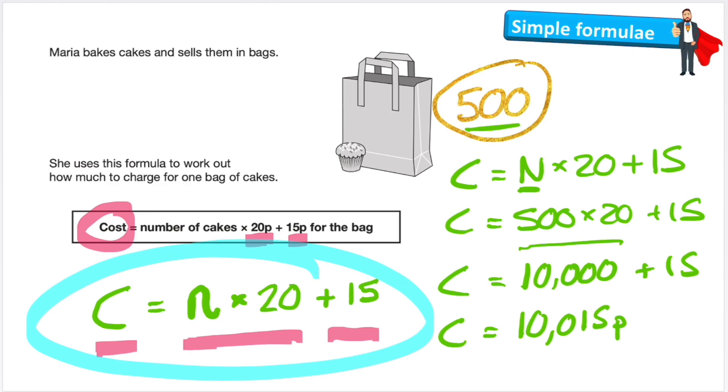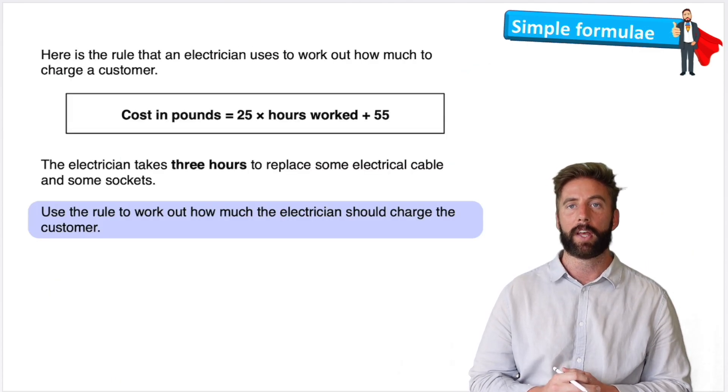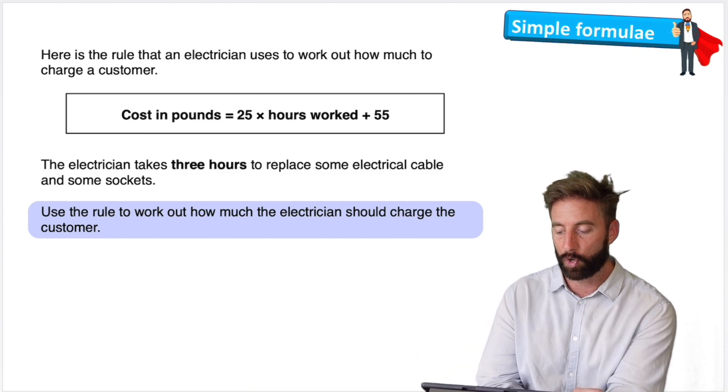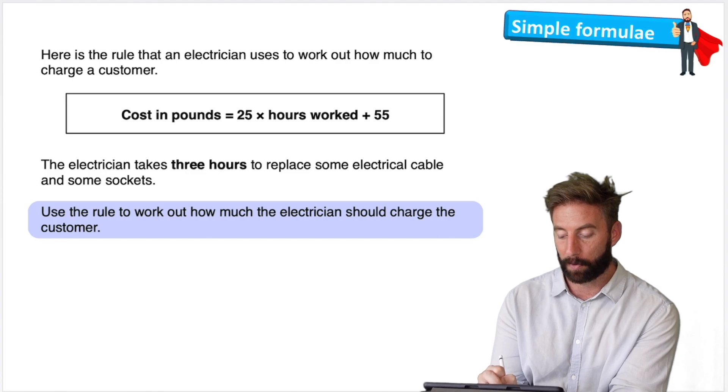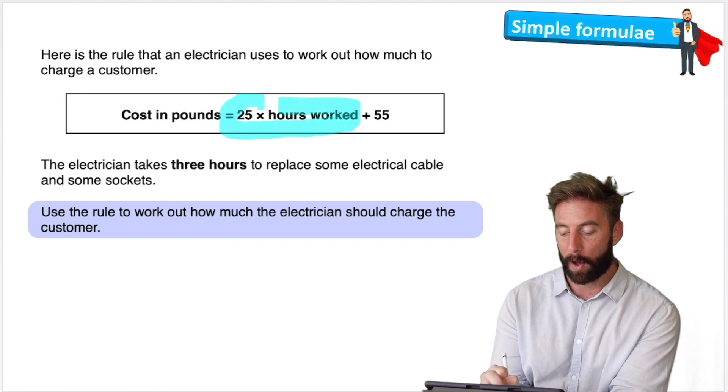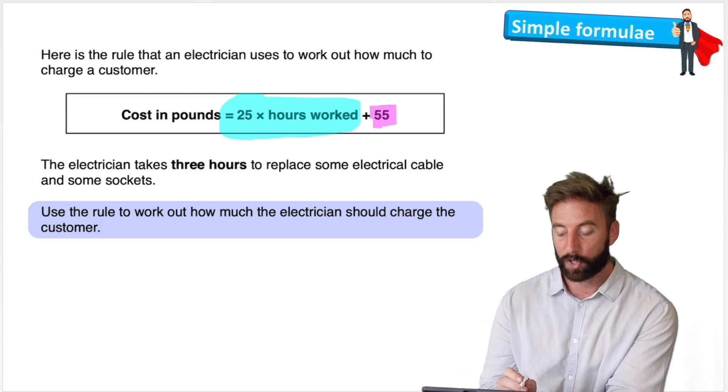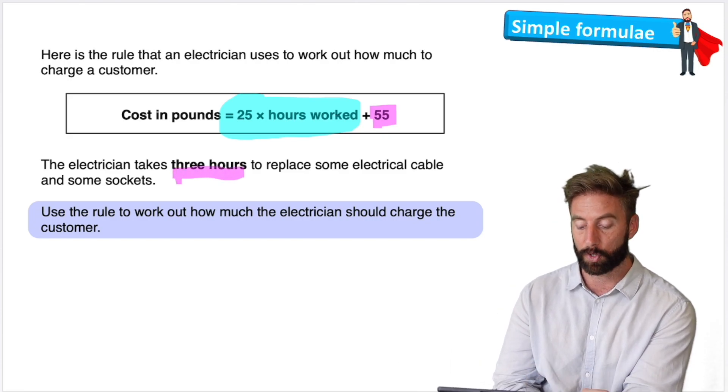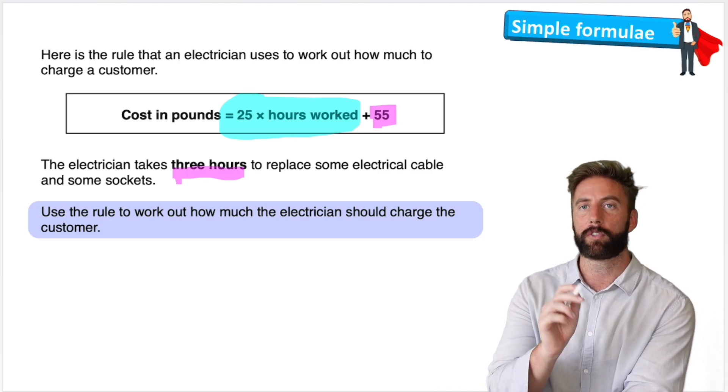Okay, hopefully you've understood what a formula is, how to write one and how to solve one. Now it's your turn. Press pause on the video, leave this screen up for a moment and see if you can work out this question. It says here is the rule that an electrician uses to work out how much to charge a customer. So the cost in pounds is 25 pounds for every hour worked, but then he also charges 55 pounds just for coming to your house. So the electrician takes three hours to replace some electrical cables and some sockets. Use the rule or the formula to work out how much he's charged his customer. Press pause, good luck.